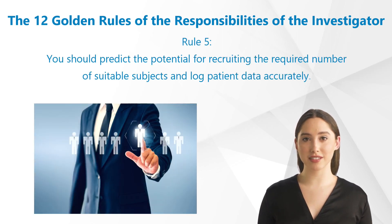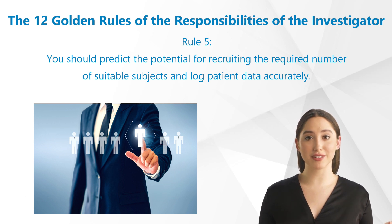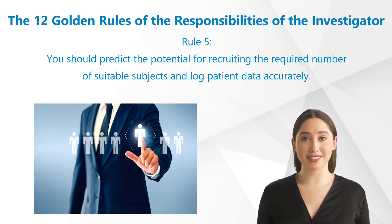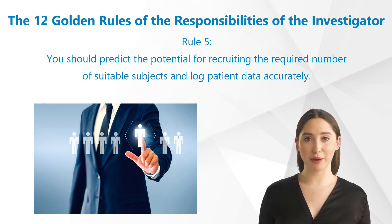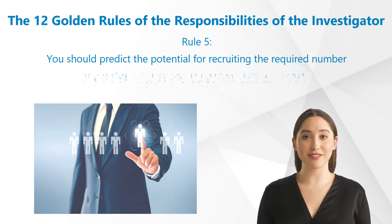Rule 5: You should predict the potential for recruiting the required number of suitable subjects and log patient data accurately. Get the necessary information prior to the start of the study in order to be able to predict the realistic potential number of subjects. The list of inclusion and exclusion criteria, for example, enables you, in combination with your medical records, to assess the frequency of patients with specific diseases.